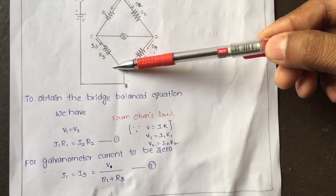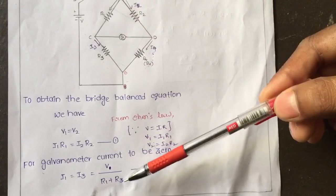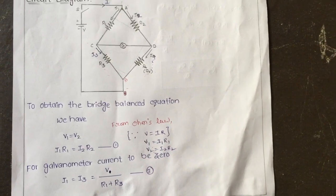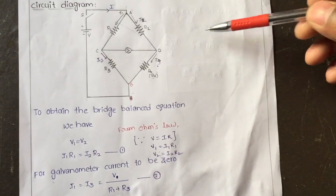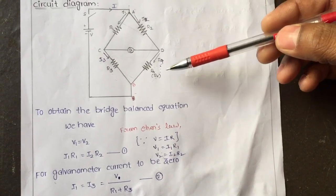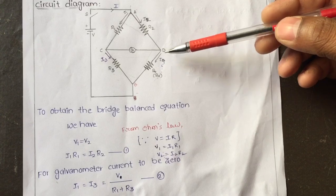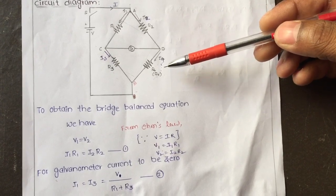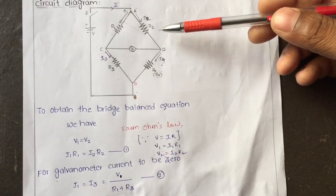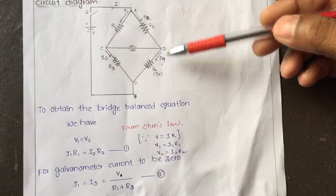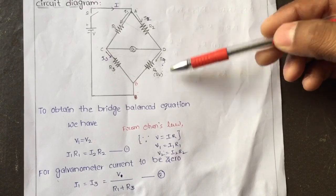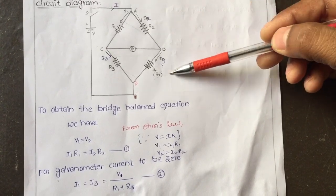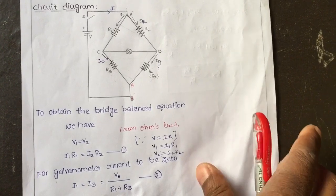For the series combination of R1 and R3, the total resistance is R1 + R3. Similarly for R2 and R4 both connected in series, the current is the same, so I2 = I4.